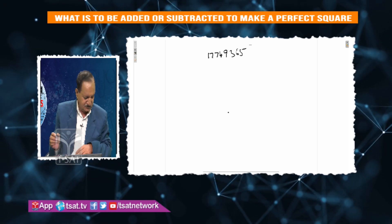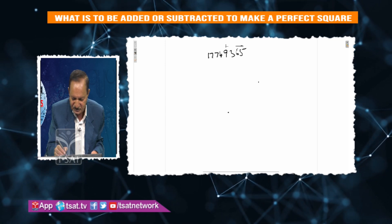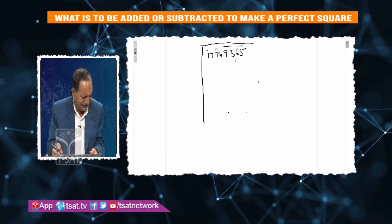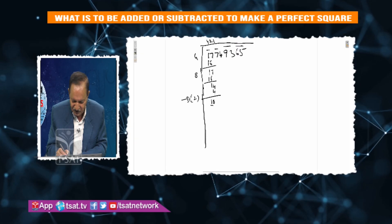What is to be added to make it a perfect square? Group: 65, 93, 74, 17 — square root. This is not the case: 4, 4, 16; 76, 26; 6, 1, 2; 1; then 4, 1, then 4.